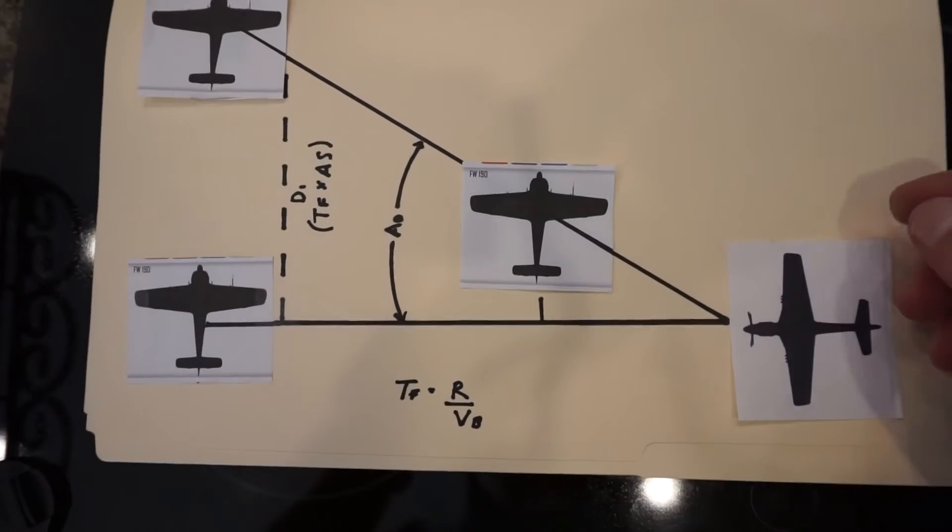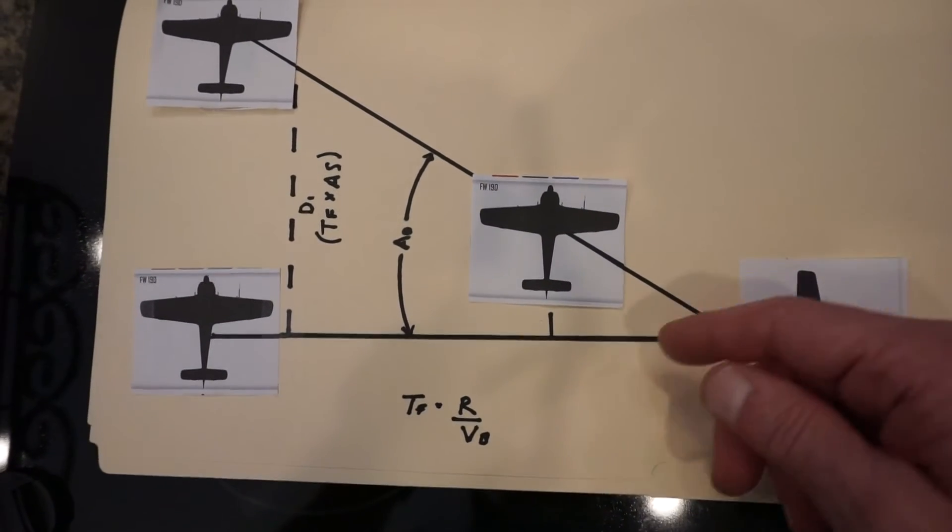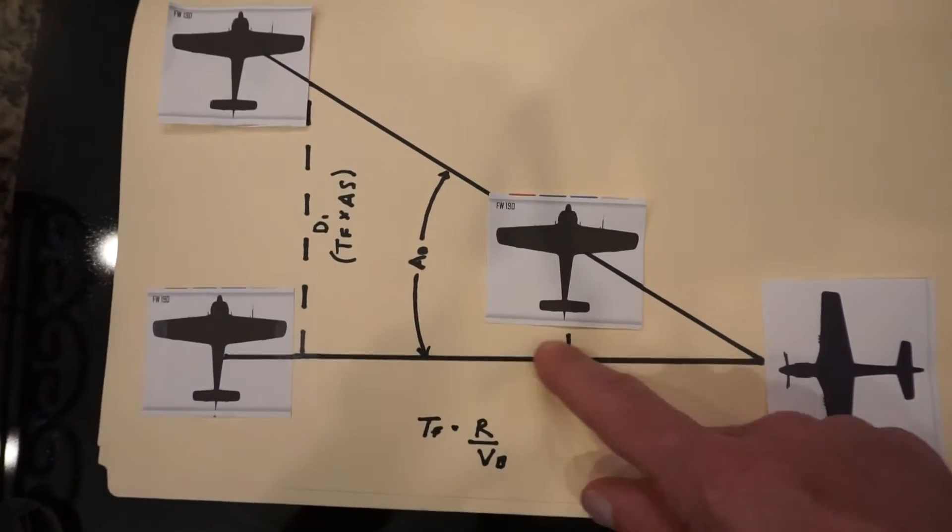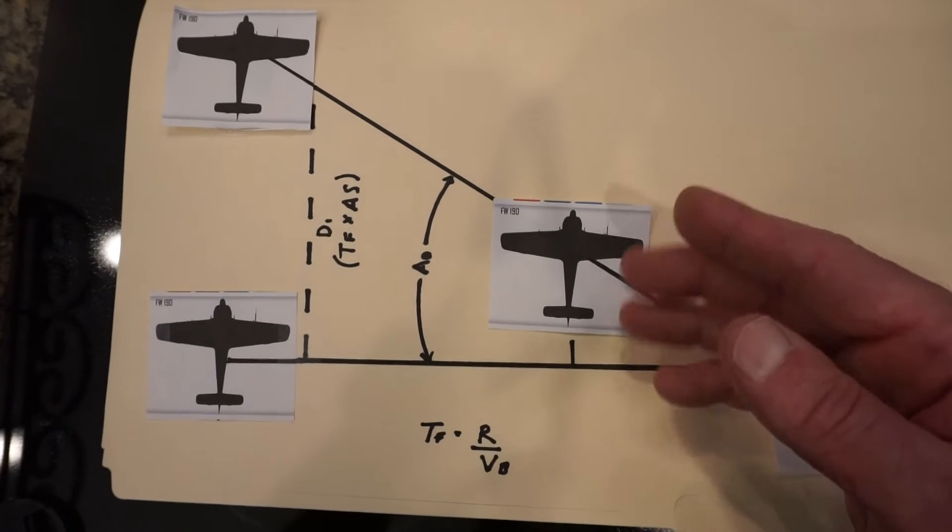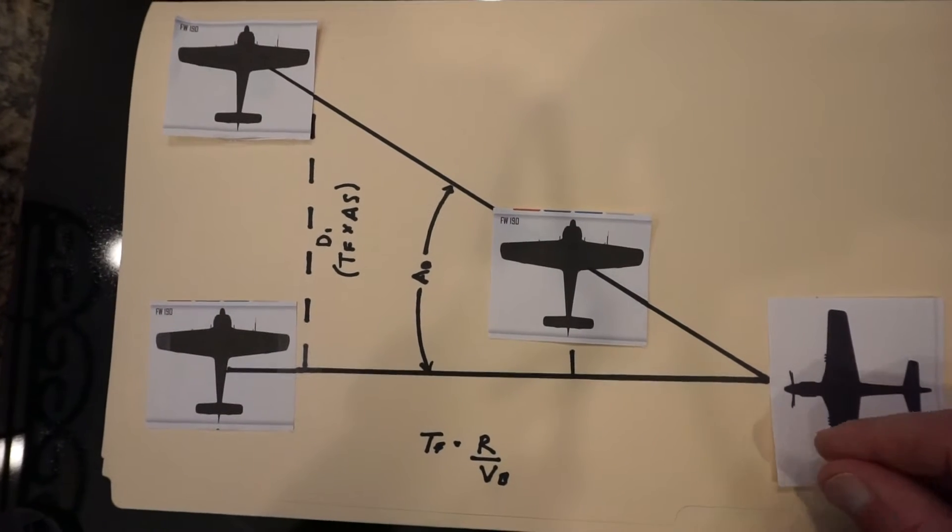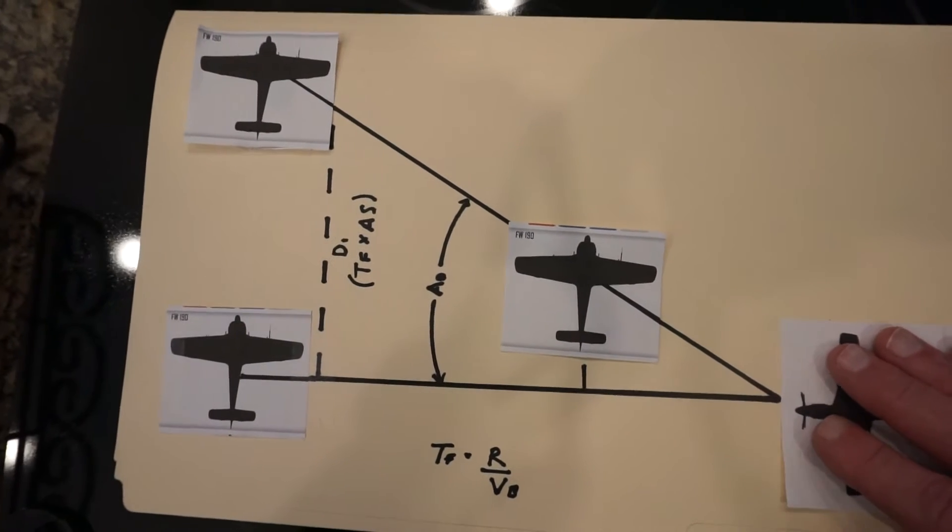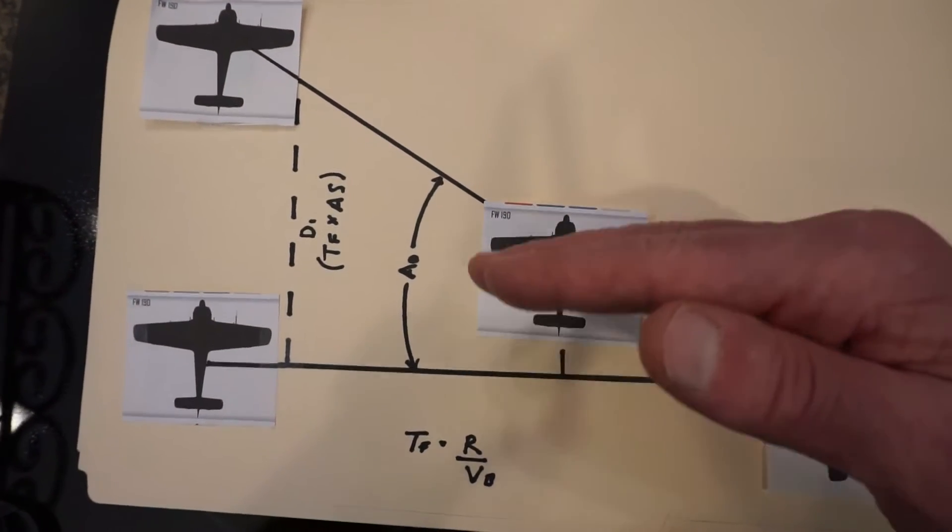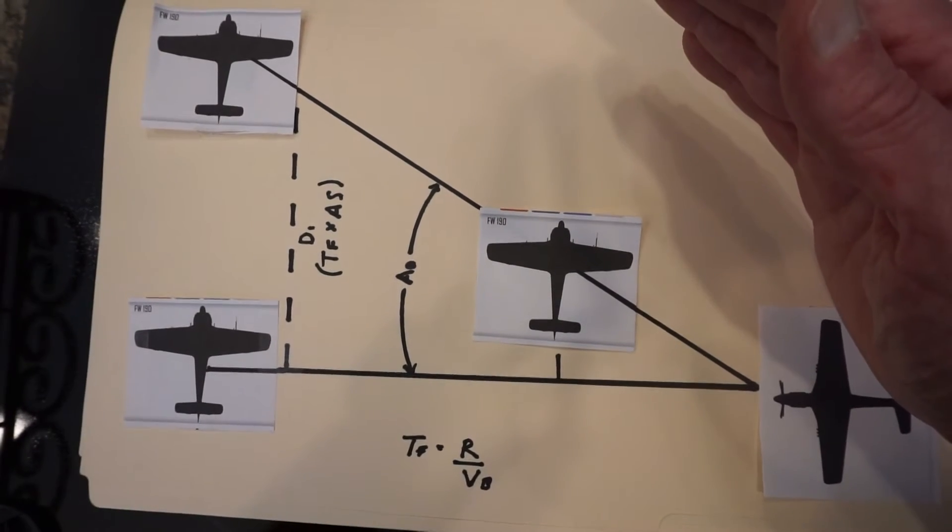So in summary the deflection angle is determined by the distance the enemy aircraft will travel which is a function of the range and the speed of your turning or angular velocity. The gyro tries to continue its original flight path lagging behind the fixed reticle. By putting the gyro reticle on the target the fixed reticle and gun aiming point is moved out in front of the target.